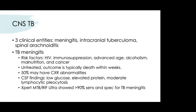CNS TB includes three syndromes: meningitis, intracranial tuberculoma, and spinal arachnoiditis. Risk factors include severe immunocompromise such as HIV/AIDS, transplant, hematopoietic stem cell transplantation, advanced age, heavy alcohol use, malnutrition, and cancer. Untreated, TB meningitis is fatal within weeks. CSF findings show low glucose, high protein, and lymphocytic pleocytosis. The GeneXpert MTB PCR has greater than 90% sensitivity and specificity for TB meningitis when performed on CSF.